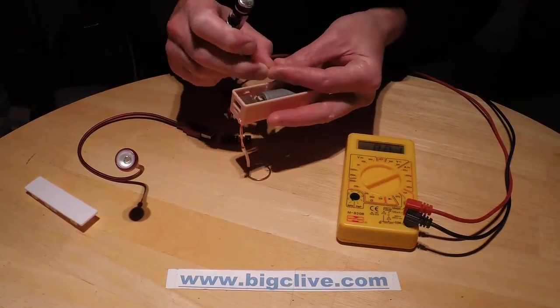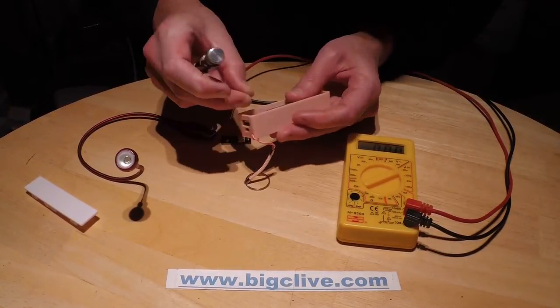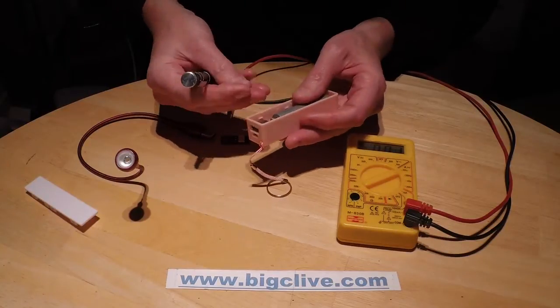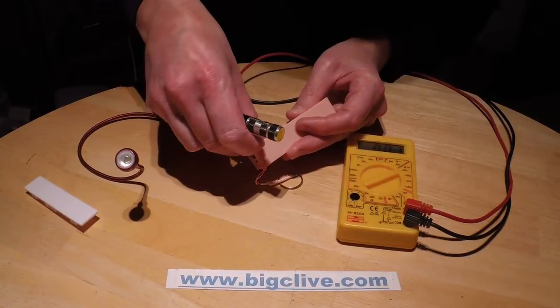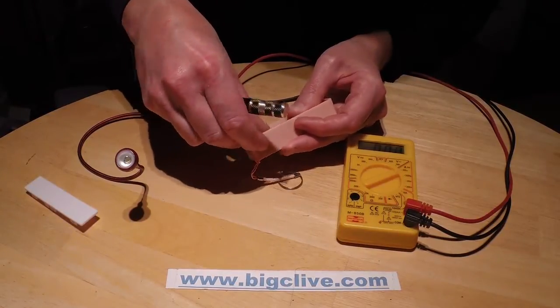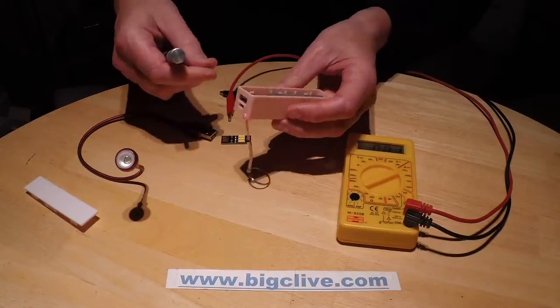But the current is absolutely minute. You've seen it's just microamps. I'm just trying to stick that bit of yellow plastic back on. I think that's a wee packer just to keep that terminal in position when the case is on.